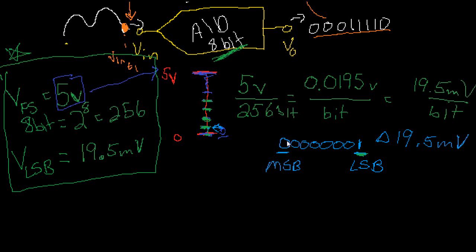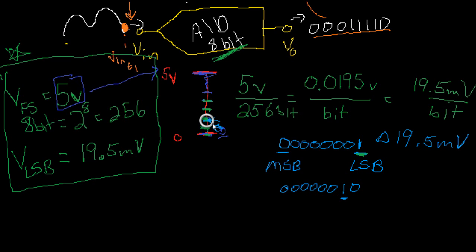If we had the 8-bit word 00000001, that's obviously going to represent our first step, or 19.5 millivolts. Our second step — if our signal was binary word 2 — that's your second step. This step right here is this point on our scale. That represents 2 increments of 19.5 on our scale.